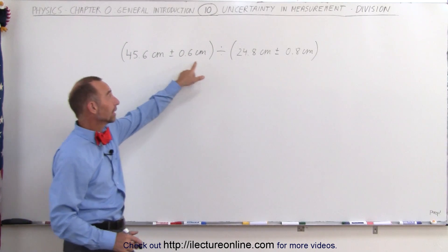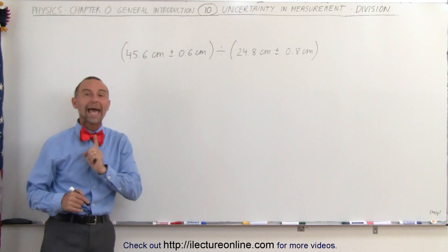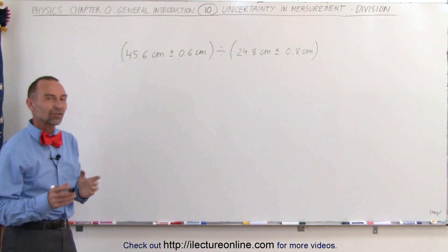We're going to convert the uncertainties that are written in numbers into percentages. And then when we divide, we also add the uncertainty in percentages, just like we did for multiplication.